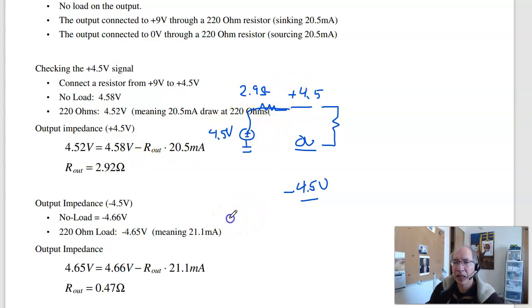That's the output impedance. At minus 4.5 volts, think Thevenin. I've got a Thevenin voltage. I've got a Thevenin resistance. The open circuit voltage is minus 4.66 volts. Connect 220 ohms to ground. And the voltage drops to 4.65 volts. So I lose 0.01 volt when I draw 21 milliamps, meaning this is 0.47 ohms. So there's my plus power supply. There's my minus power supply. What I'm doing is checking to see what the output impedance is. How much is the voltage going to drop when I load it? Ideally, this will be zero. It's not. And this is one way to find the output impedance of your amplifier, of your power supply.